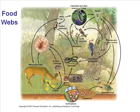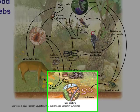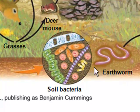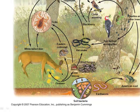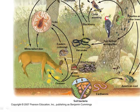Food webs show feeding relationships as well as energy flow in an ecosystem. It's a visual map of feeding relationships and energy flow, showing the many paths by which energy passes among organisms as they consume one another. Soil bacteria play the role of decomposer in the ecosystem, breaking down dead things and providing the essential elements that grasses, trees, and other producers need.